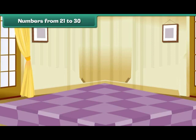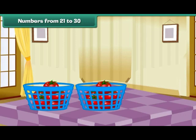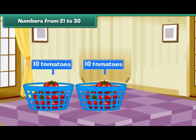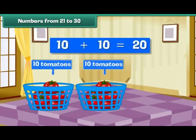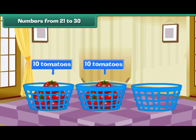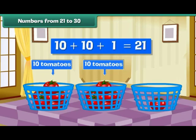Numbers from 21 to 30. Look at these two baskets of ripe tomatoes. Each basket contains ten tomatoes. Therefore, we have two groups of ten, which means we have 20 tomatoes. Here is an empty basket. Let us place a tomato inside it. We have two tens and one. That is 21 tomatoes.